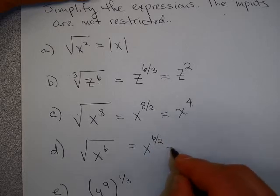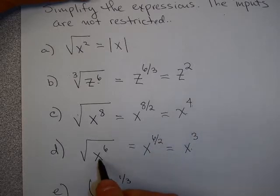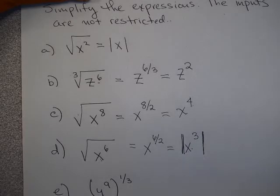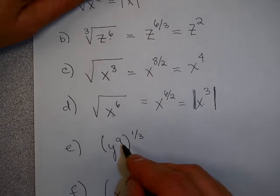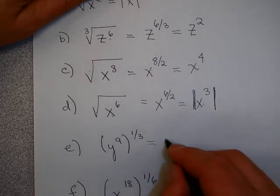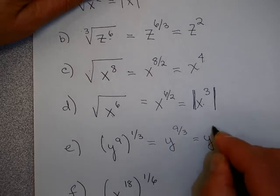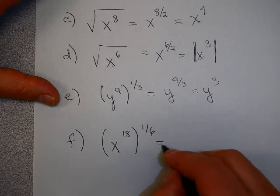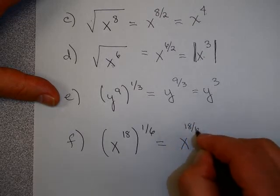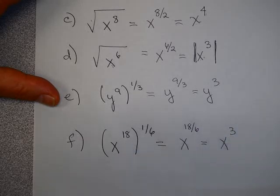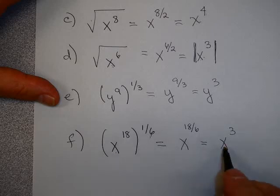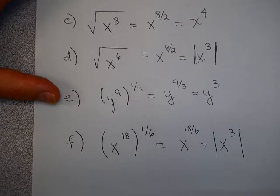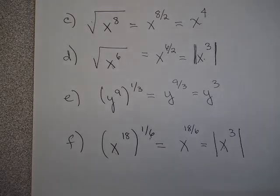But you have to be careful on this one. This is x to the 6th over 2, which is x cubed. Now x cubed could be negative. If x is negative, x cubed is negative. And you know that this means positive square root, so I need those absolute value signs there. Cube roots are defined for everything, so y to the 9 times 1 third is y to the 9 over 3, which is y cubed. And x to the 18th to the 1 6th. 1 6th is a 6th root. That's an even power, so I have to be careful here. That's x to the 18 over 6, which is x cubed. And because this is the 6th root, and it's possible if my original input was negative that this answer could be negative, I need to put absolute value signs around this.